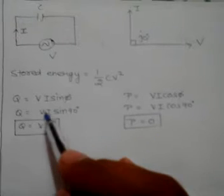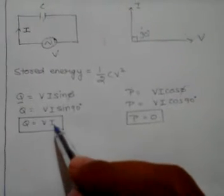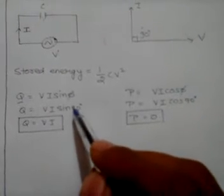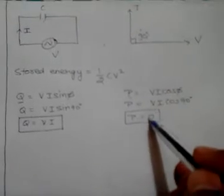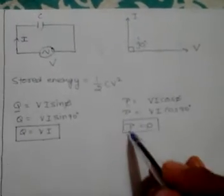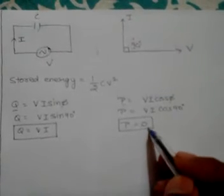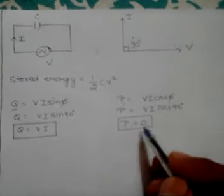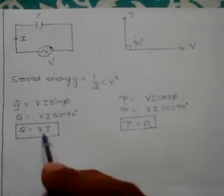The capacitor always stores energy in its electric field, given by half C V squared. Again, the reactive power is V times I since the angle is 90 degrees, and the active power is zero. So in the case of a capacitor also, it will never consume or deliver active power — it will only consume or deliver reactive power.